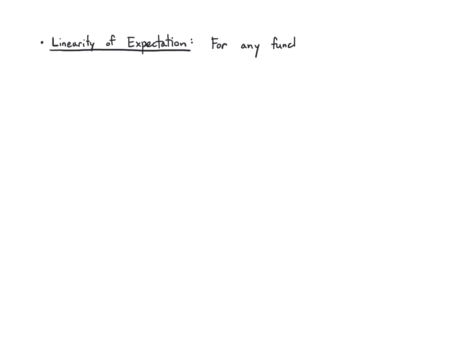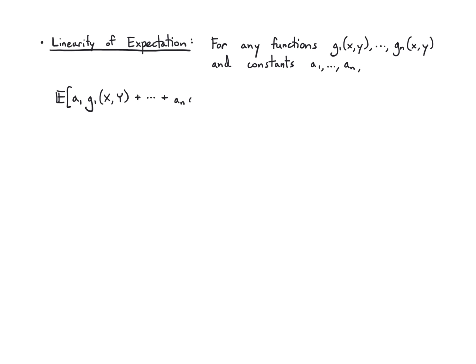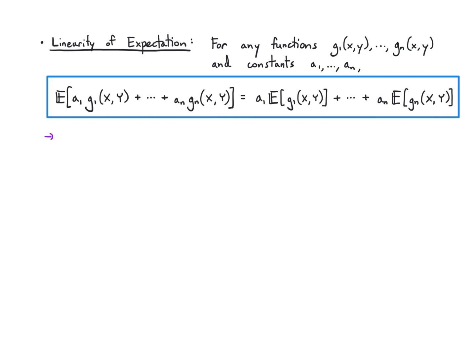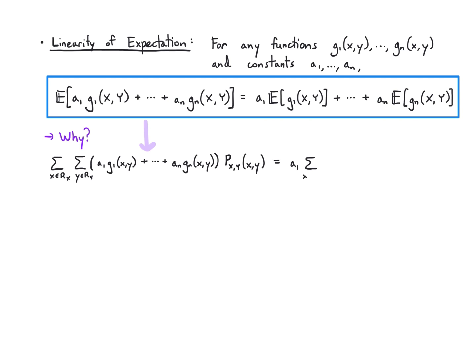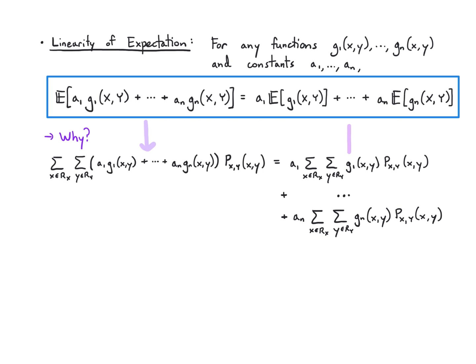We still have the nice property of linearity of expectation, written quite generally. If you have functions g₁ up to gₙ and constants a₁ up to aₙ, then the expectation of the sum a₁g₁ + ... + aₙgₙ equals a₁·E[g₁] + ... + aₙ·E[gₙ]. Basically, you can break up expectation over plus symbols. In the discrete case you split the sum weighted by the joint PMF, and each piece corresponds to an individual expectation.